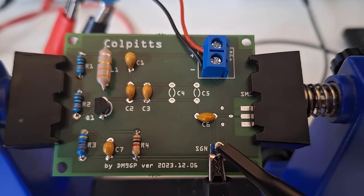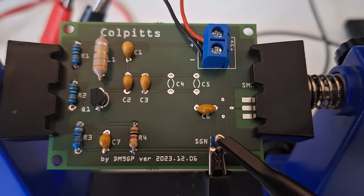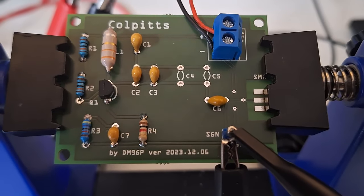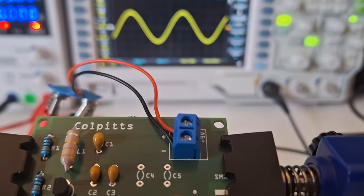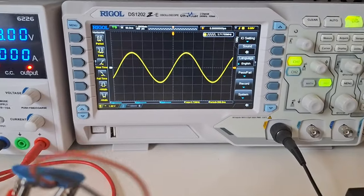It's a Colpitts oscillator in common base configuration. The value of the components are chosen so that it oscillates at 3.7 MHz in the 80m ham radio band.